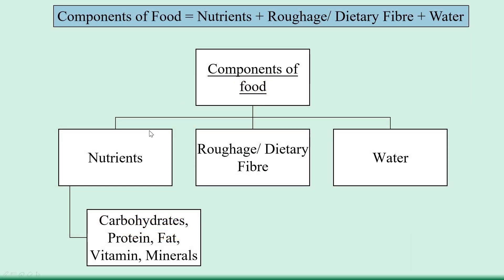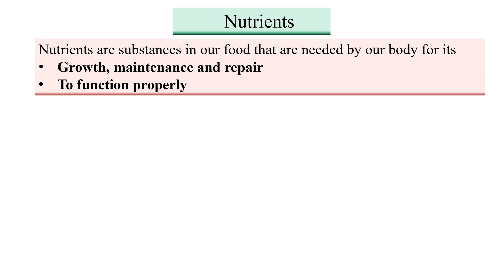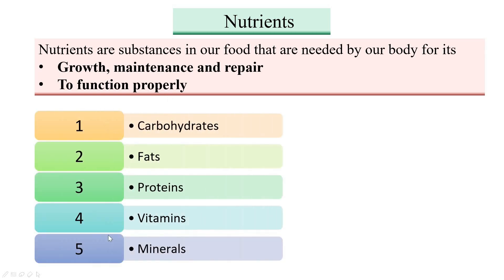Now we know that nutrients, dietary fiber, and water are the different components of food. We will study each of these components separately — first nutrients, then dietary fiber, then water. Nutrients are substances in our food that are needed by our body for its growth, maintenance, repair, and to function properly.